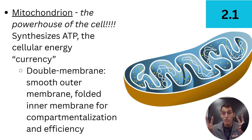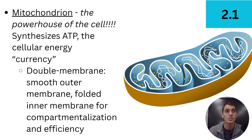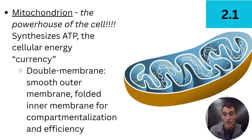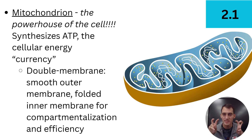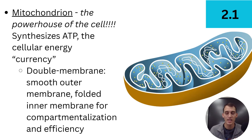ATP is what we call the cellular energy currency. It makes ATP, which powers all the processes of the cell. The mitochondria is the powerhouse of the cell — remember that. A little about the structure of the mitochondria will become important later on, especially when we start talking about cellular respiration.